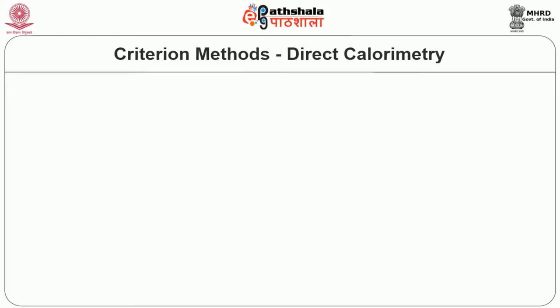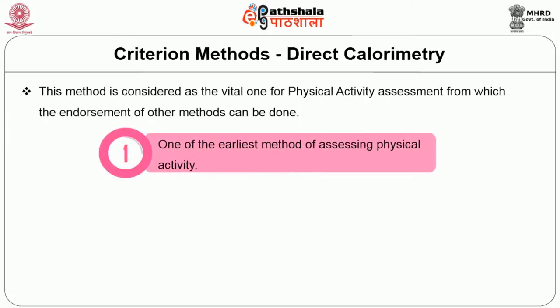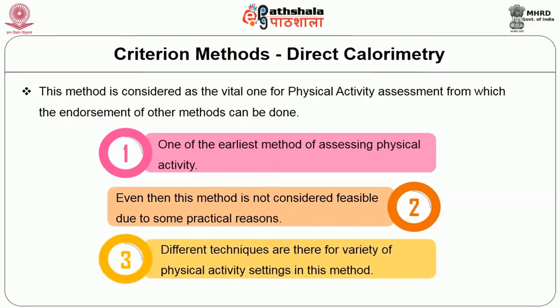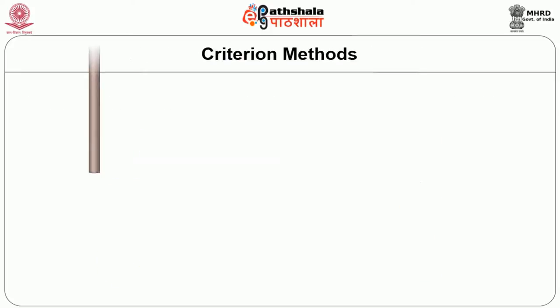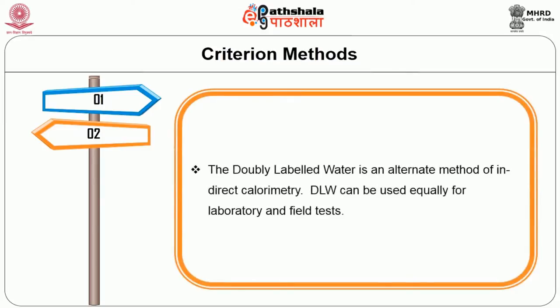The criterion method can be evaluated by direct calorimetry, considered the vital method for physical activity assessments, from which endorsement of other methods can also be done. It is one of the earliest methods of assessing physical activity, though not always feasible for practical reasons. The next method is indirect calorimetry — the measurement of energy expenditure by calculating oxygen utilization, used as a criterion method for certification.